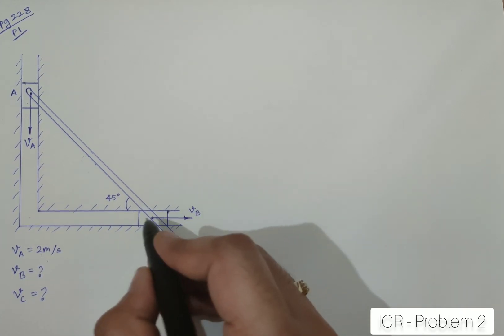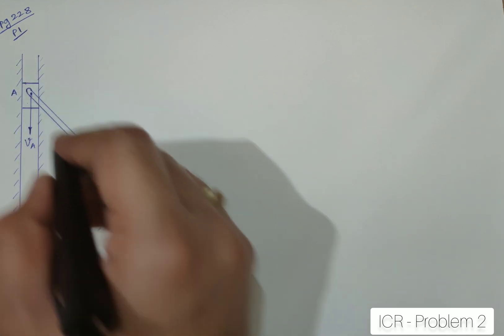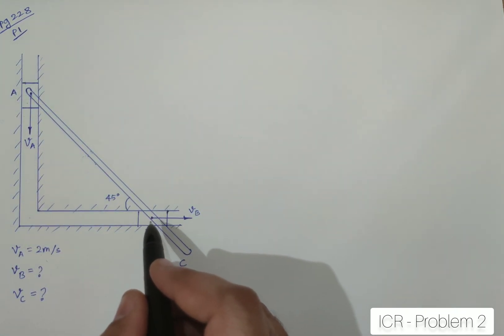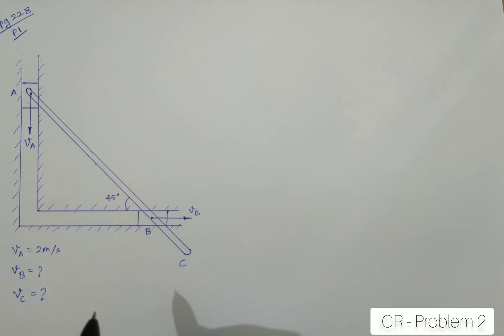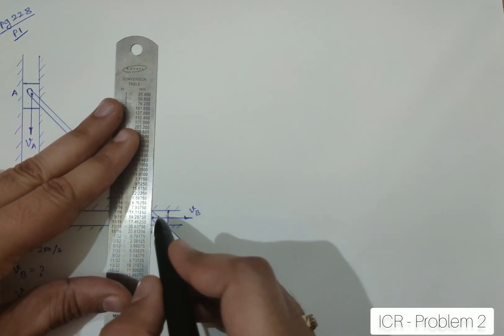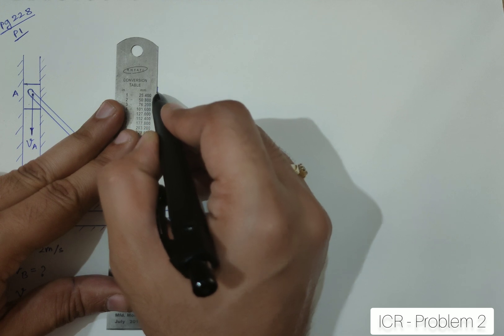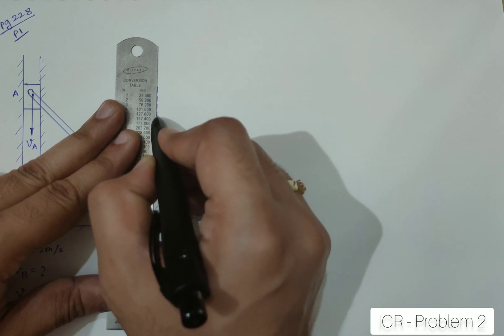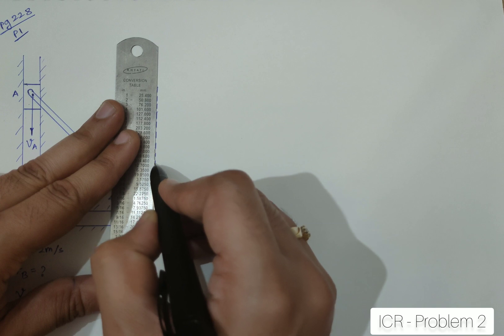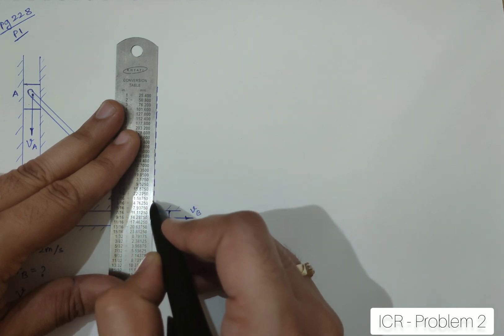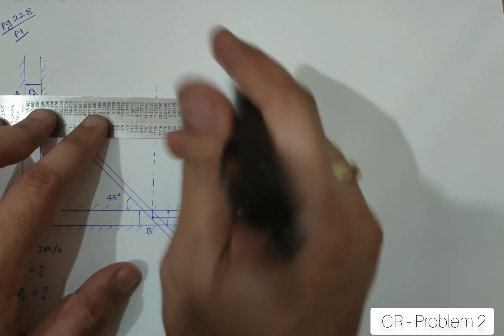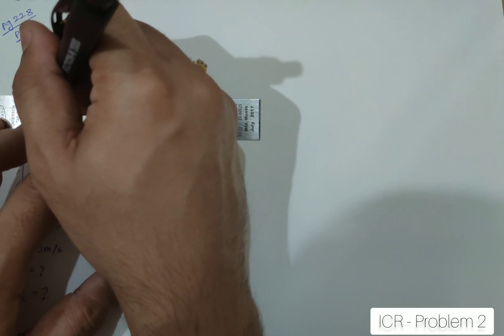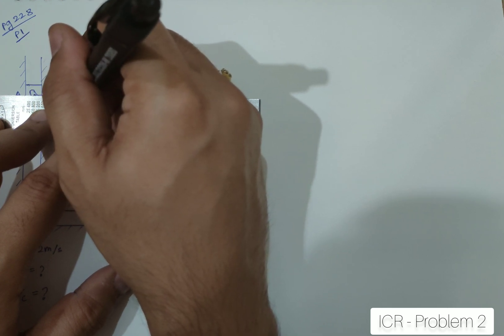Now, using these two velocities, as I have always kept on telling that, ICR is a point which will be located by the intersections of these two velocities, the perpendicular. So, let me just get the velocities perpendicular. I will just draw the perpendicular for both the velocities. And yes, also remember one thing, that ICR is a zero velocity point. So, my actual velocity at the point ICR will be zero. It will have no linear velocity.